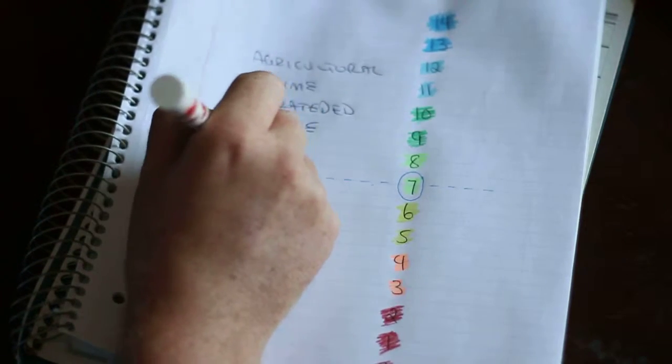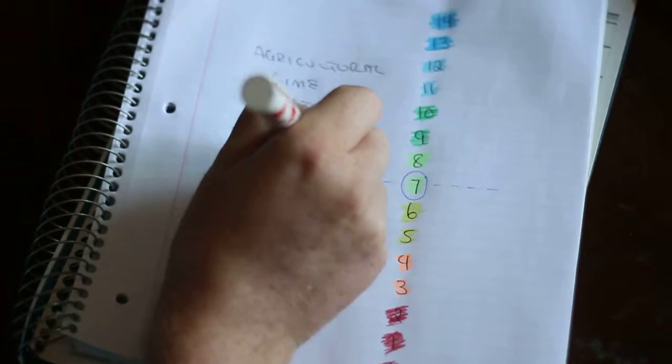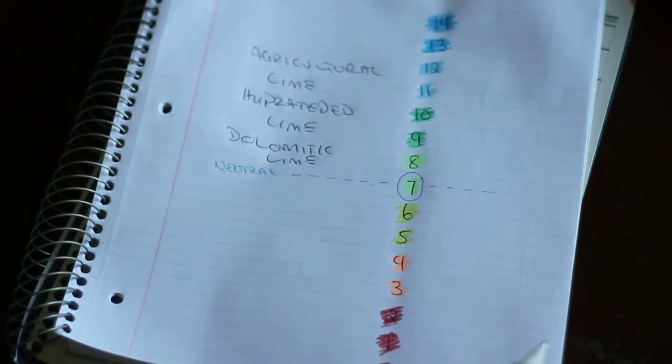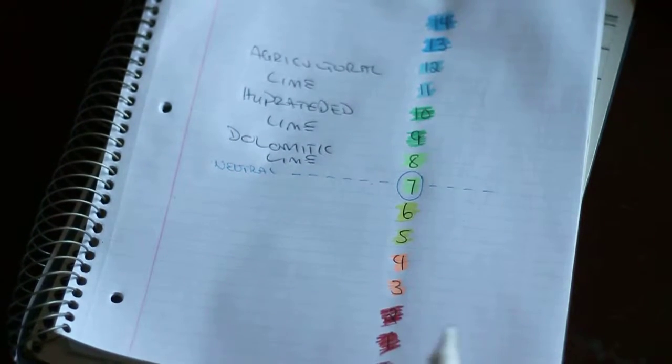You can also go with a dolomitic lime and what that does is it's virtually the same as agricultural lime but it's added magnesium which plants do need, so if you find that your soil is a little bit low on magnesium you might want to opt for that.